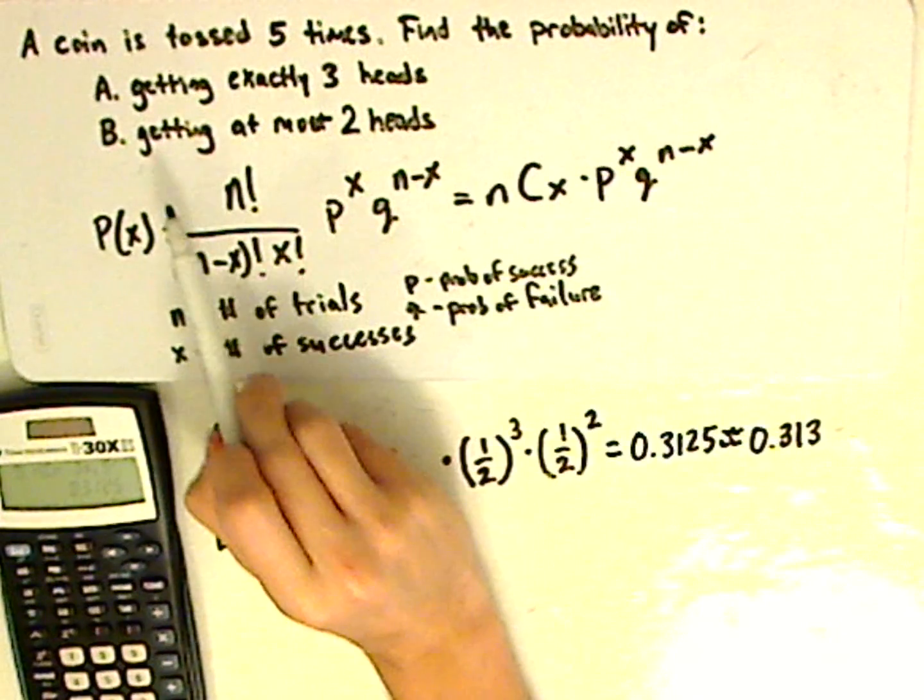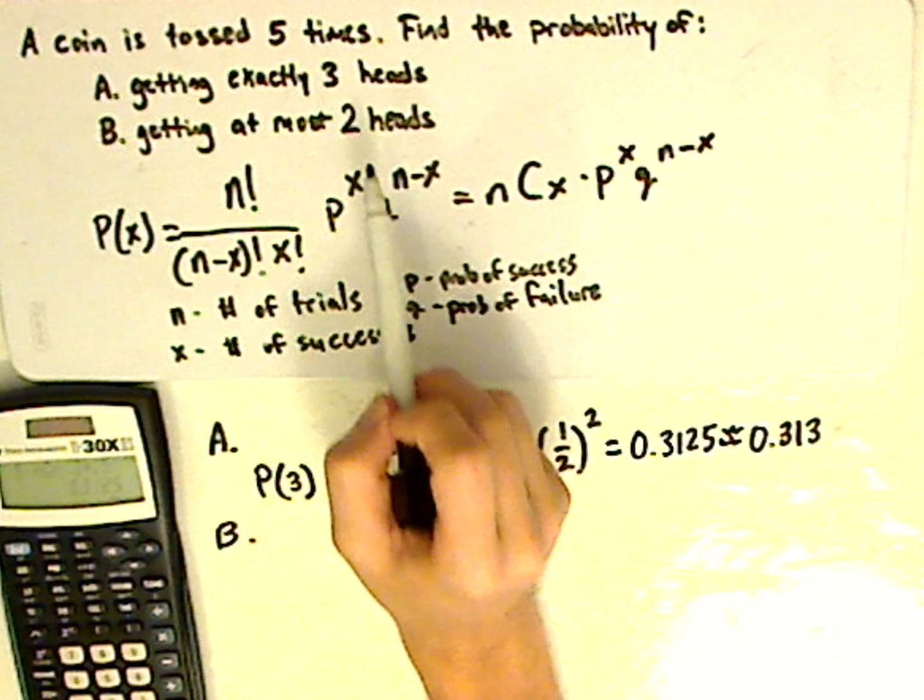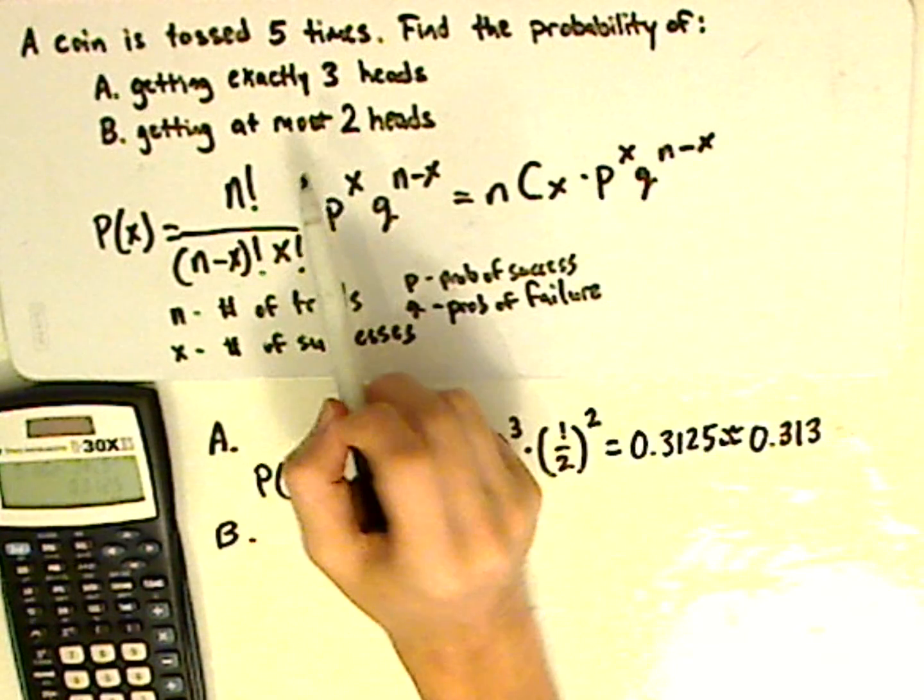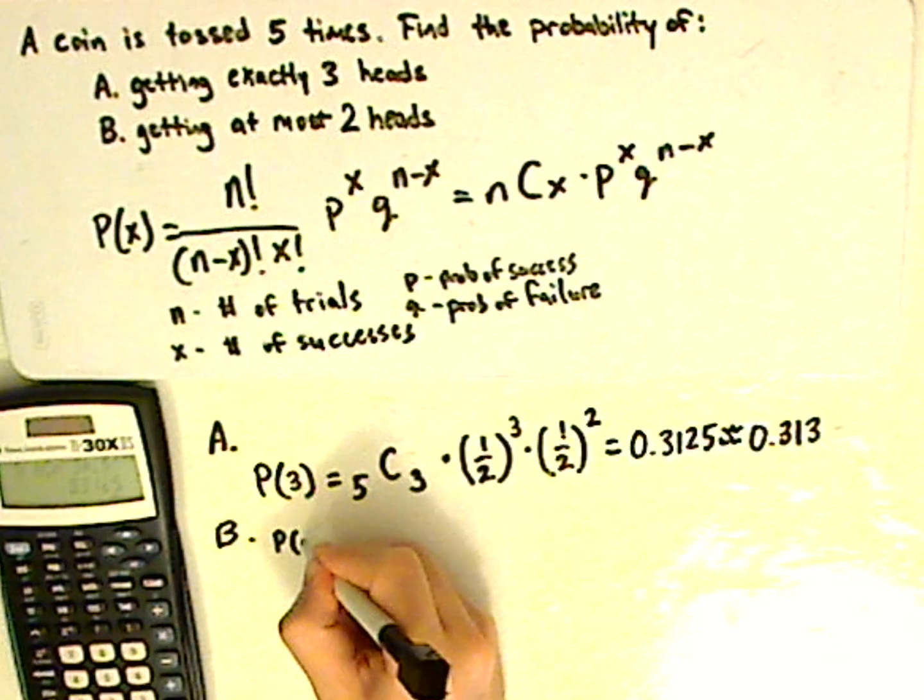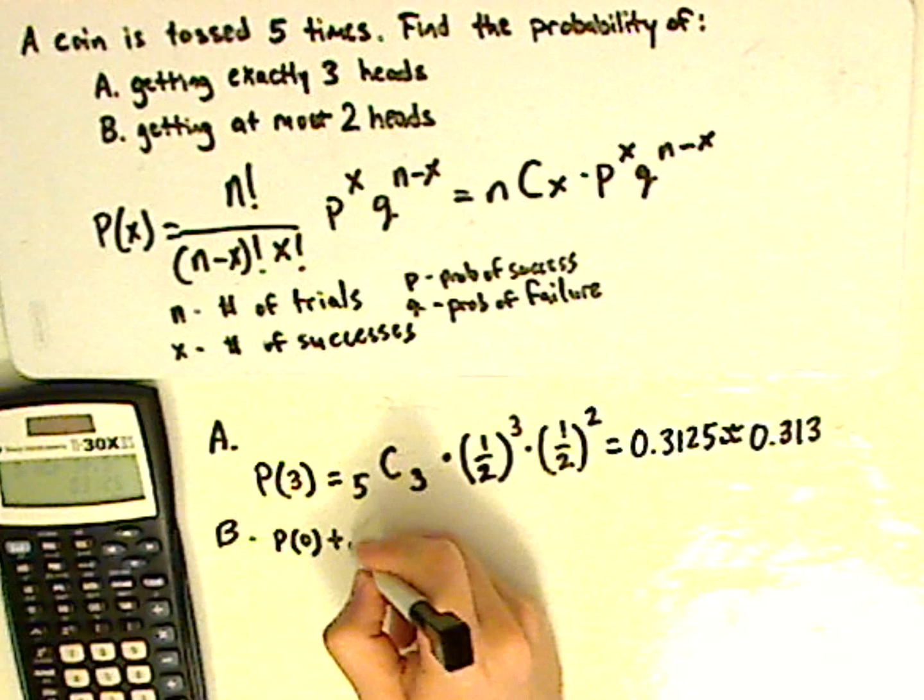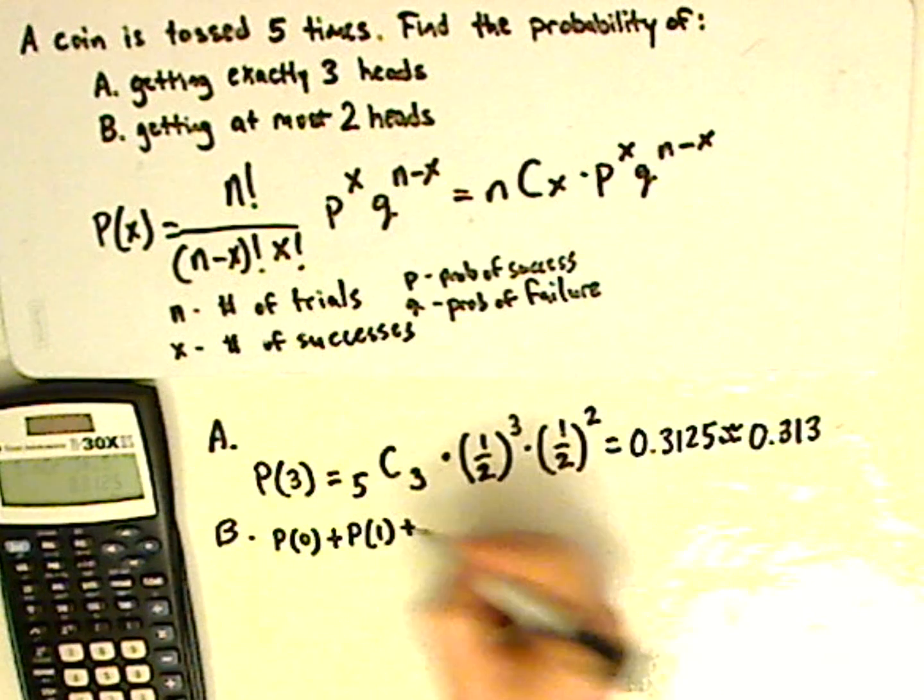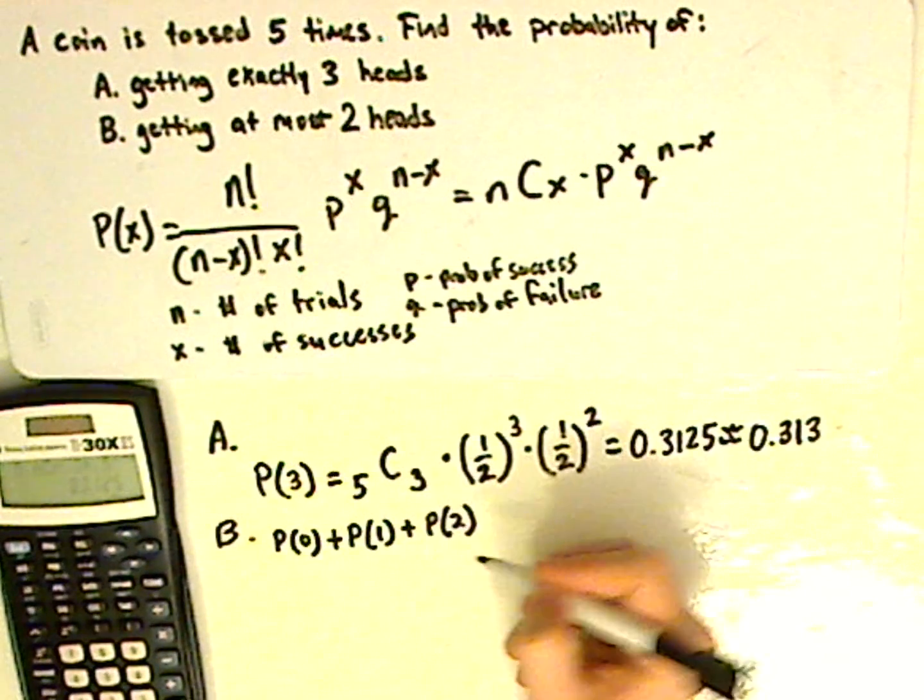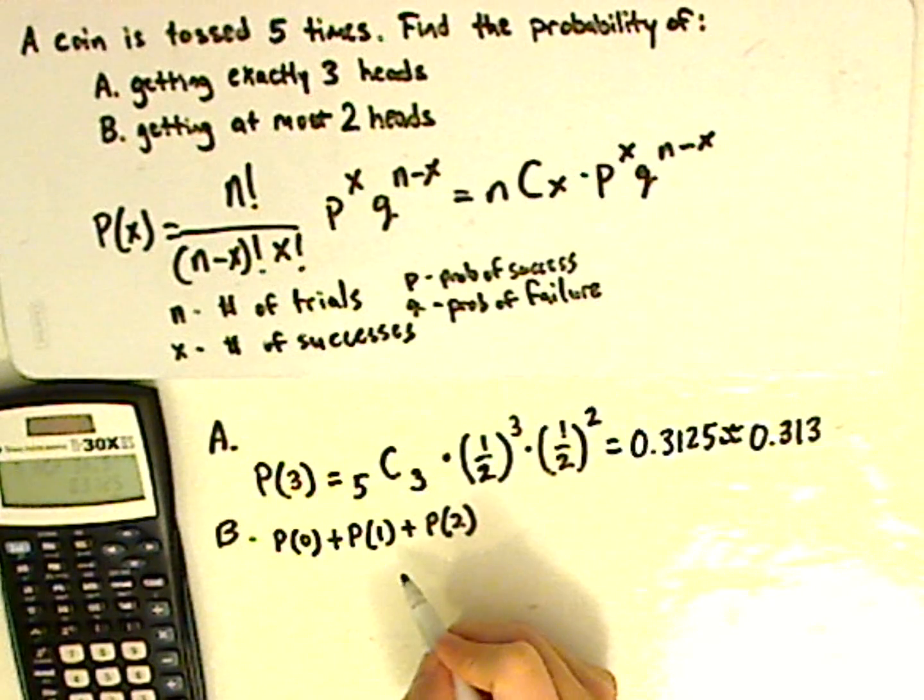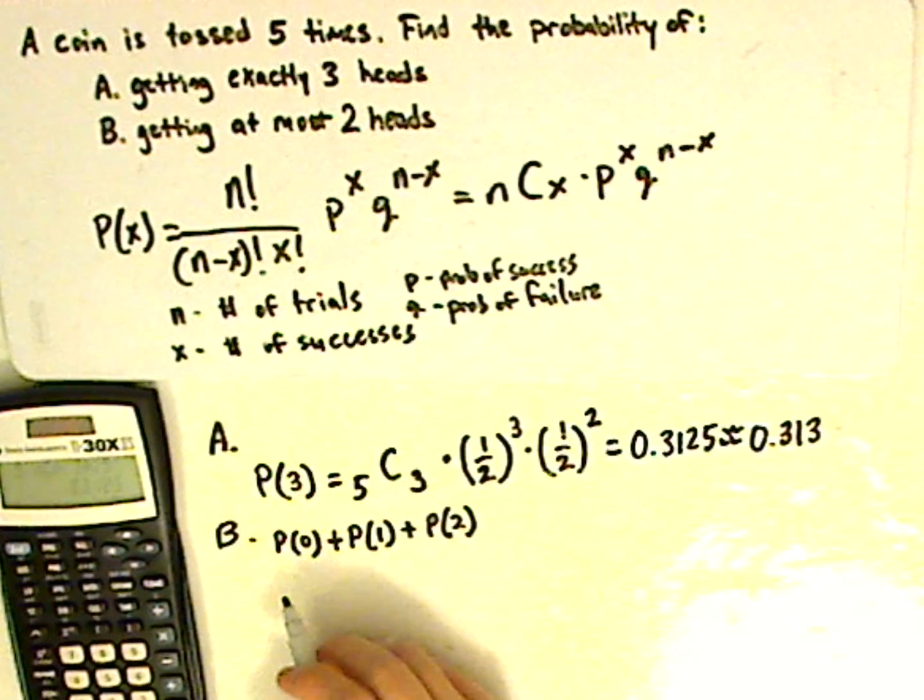Letter B. It says getting at most two heads. So what do you need to calculate. It's at most. So you can get either 0, 1 or 2. So you can get the probability of 0 or, when you consider or, use plus, use the additive rule. So P of 0, P of 1, plus P of 2. It's at most two. So you can get either 0 heads, 1 head, or 2 heads. And so I'm calculating all these probabilities.